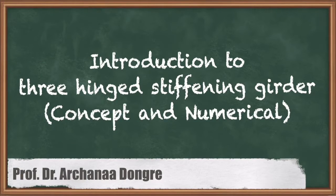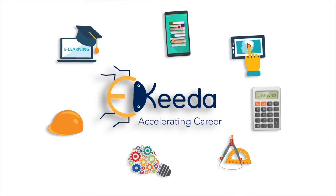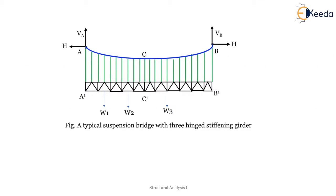Let us start with an introduction to 3-hinged stiffening girder. We are going to cover a concept and a numerical problem on this topic. Consider a suspension cable which is stiffened at three hinges: one hinge here, one hinge at this place, and the third at point C.